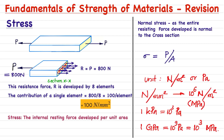The SI unit of stress is newtons per meter square, or Pascal. If given in newtons per mm², this is equivalent to 10⁶ newtons per meter square, which is known as mega Pascal. 1 kilo Pascal equals 10³ Pascals, and 1 giga Pascal equals 10⁹ Pascals or 10³ mega Pascals. These unit conversions are very important when solving problems in MOS or in machine design.